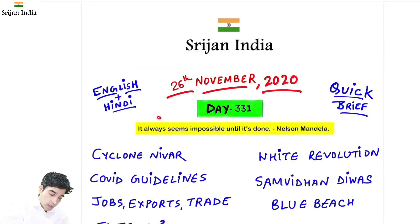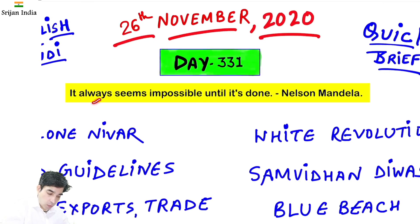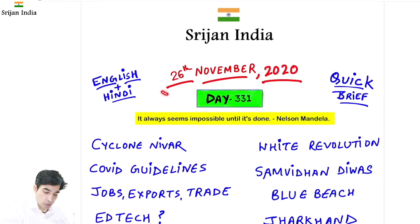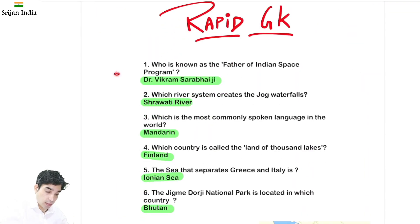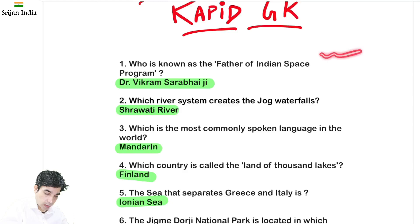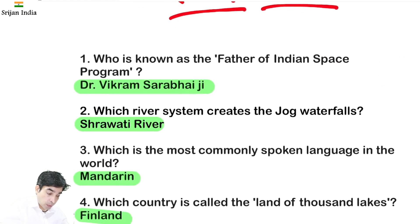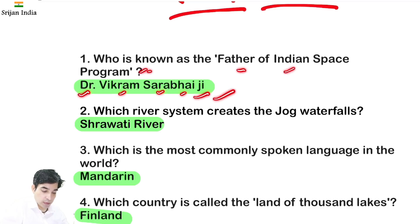It always seems impossible until it's done. Today is 26th of November 2020. Let us have a quick discussion of all these important articles — rapid GK yesterday questions ke answers hain. Dr. Vikram Sarabhai ji ko kaha jata hai Father of Indian Space Program.